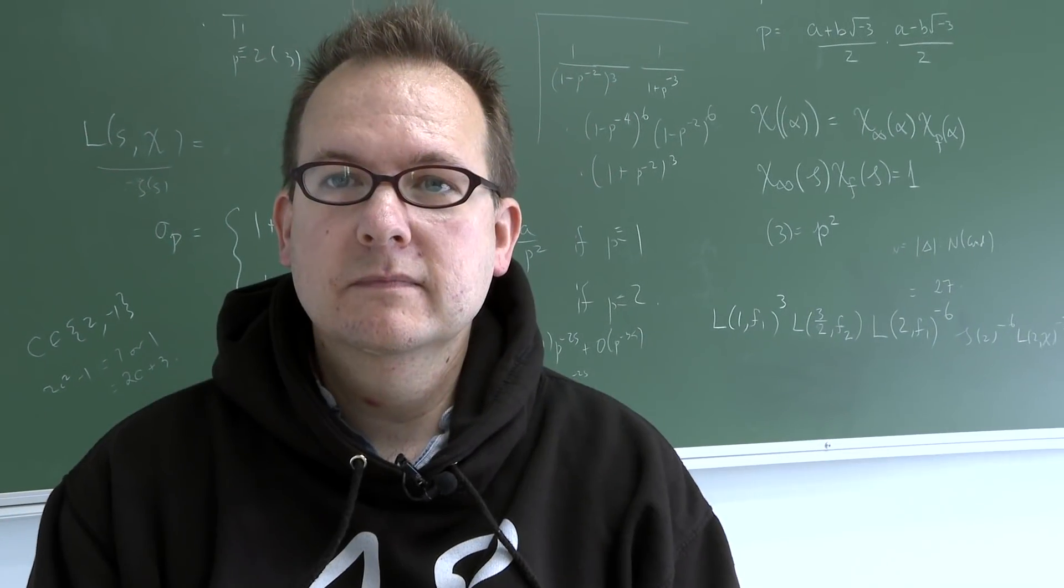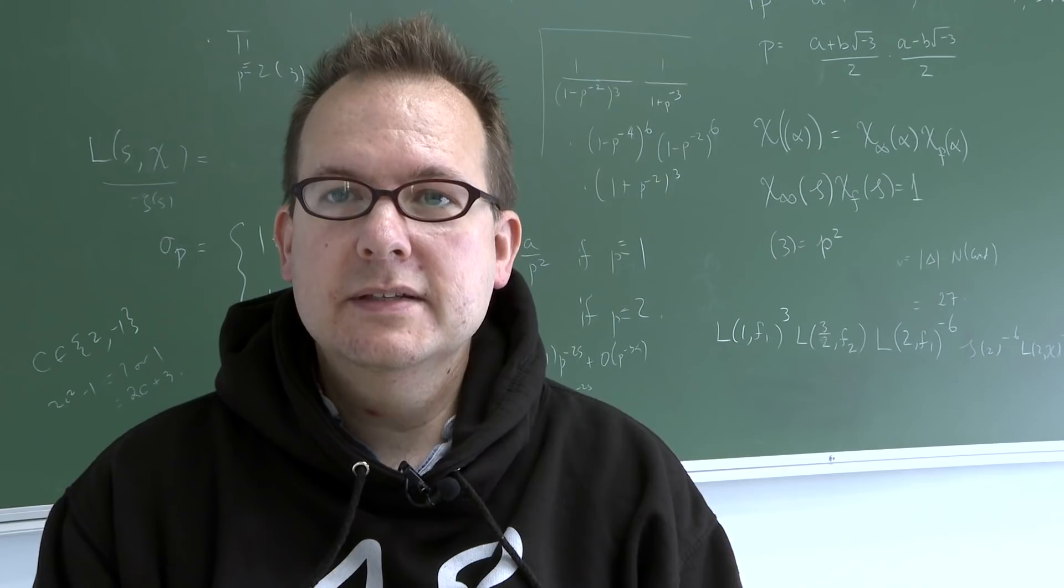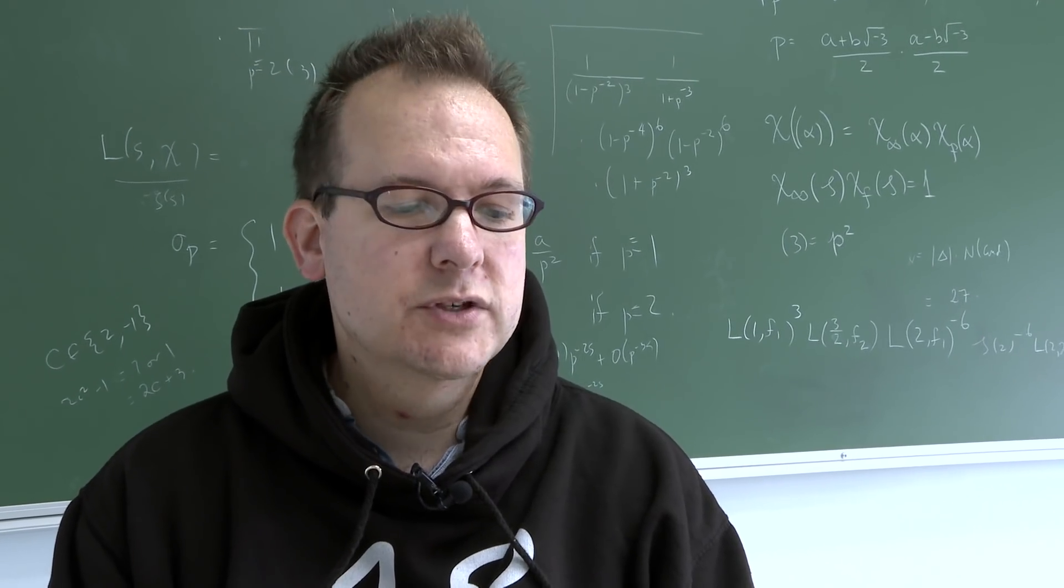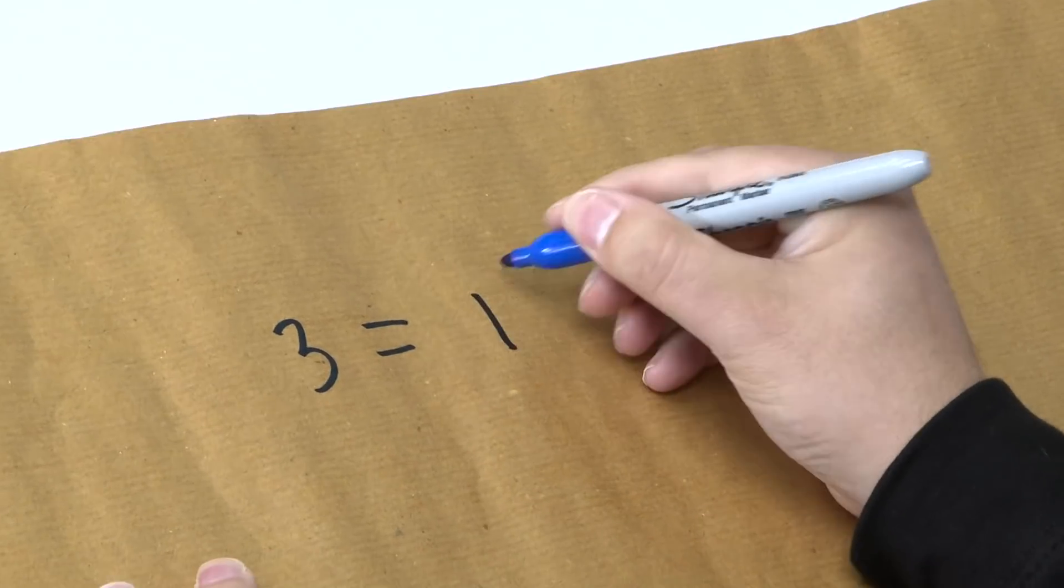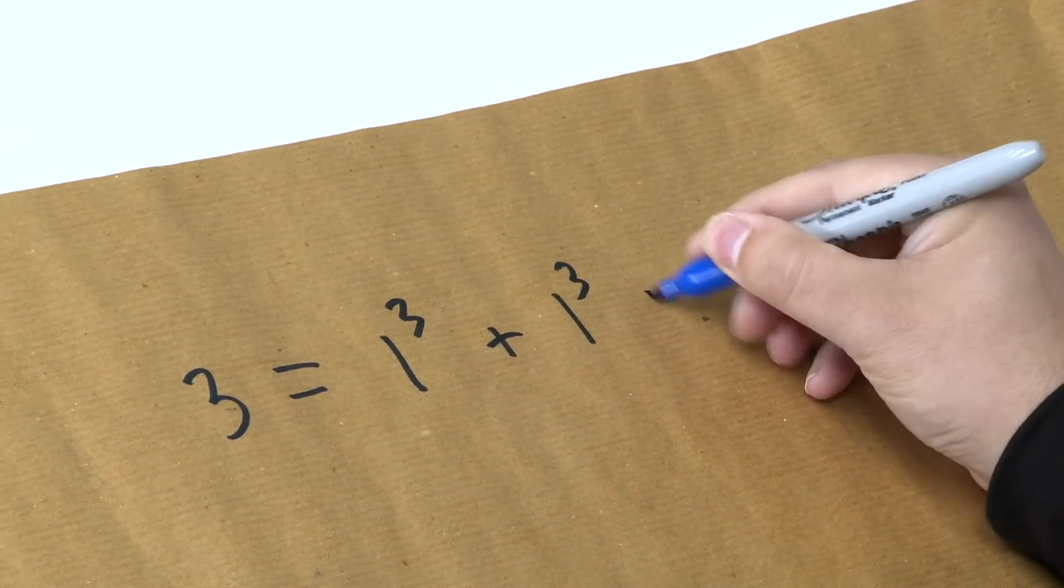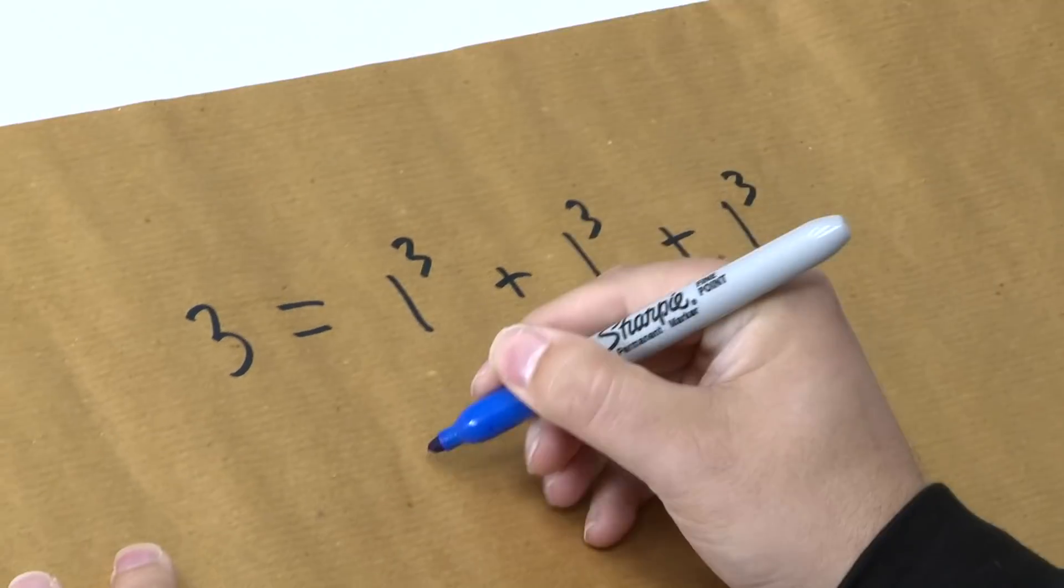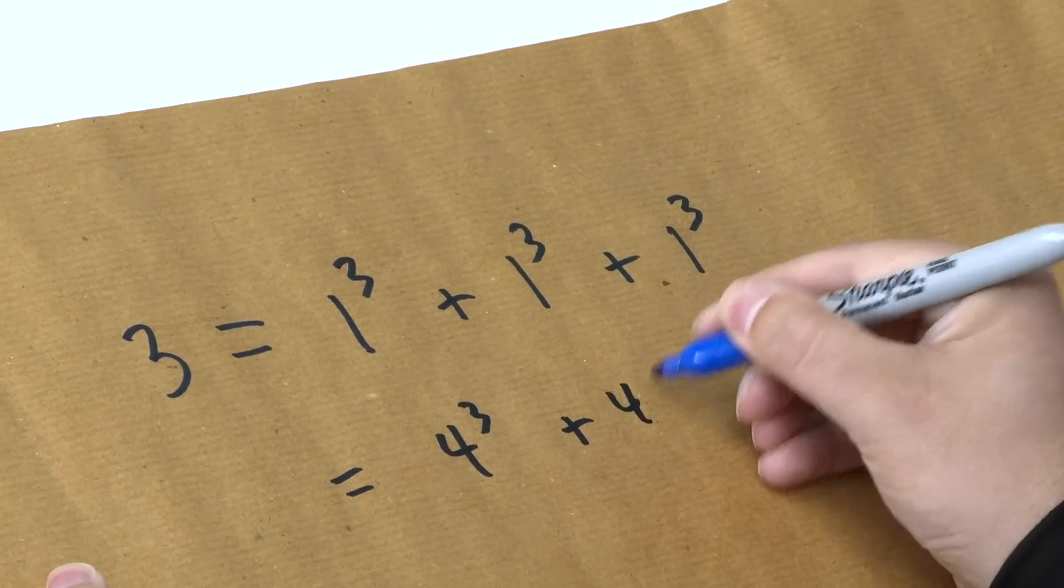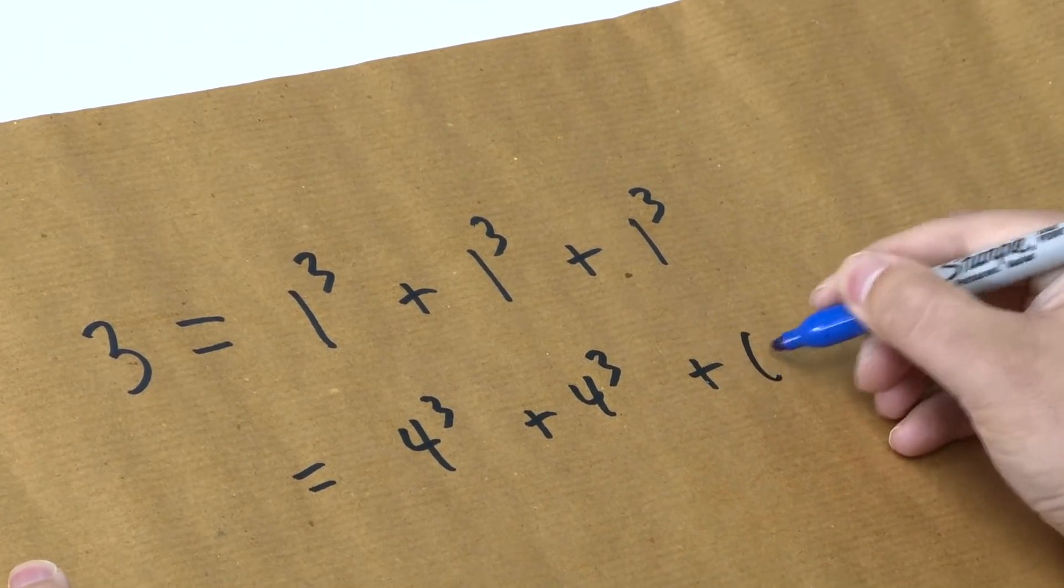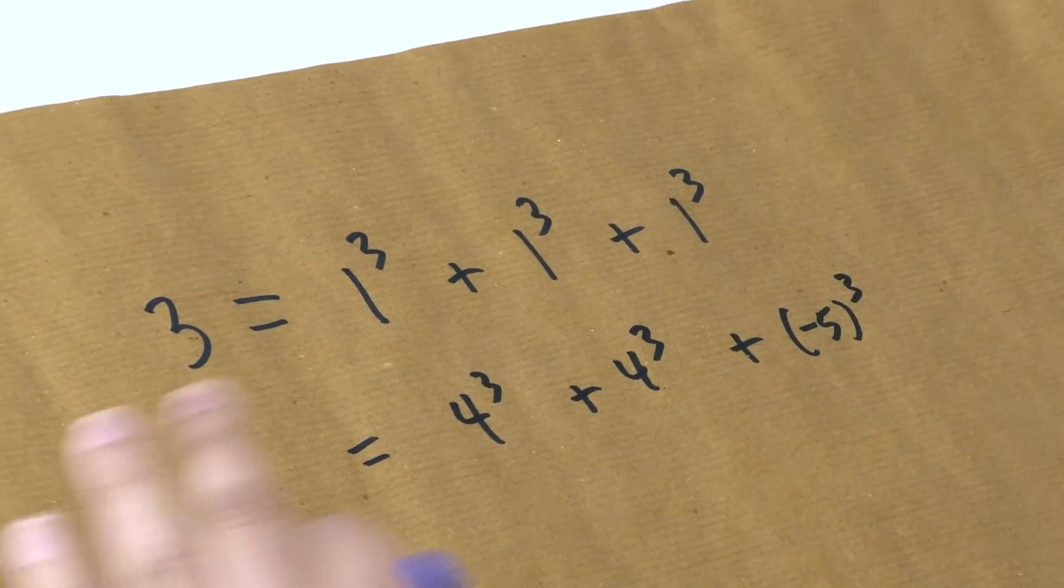Three was already known as a sum of three cubes in a couple of ways. Three had two known representations as a sum of three cubes. One cubed plus one cubed plus one cubed, and also four cubed plus four cubed plus negative five cubed. So both of them single digits.